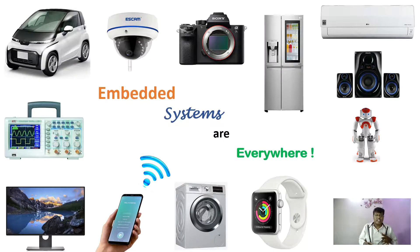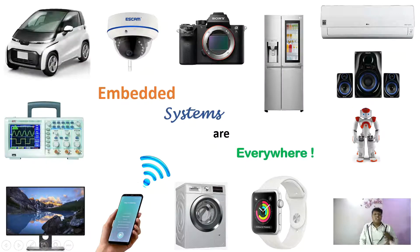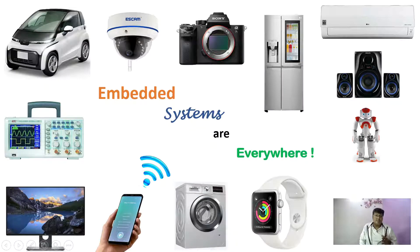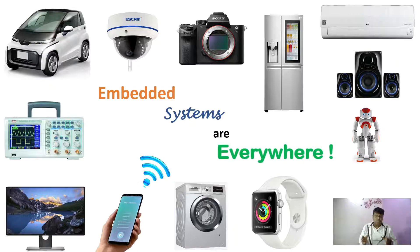Now let's look at the different types of embedded systems around us. Just look around yourself — there are plenty of embedded systems like cars, CCTV cameras, refrigerators, air conditioners, vehicles, and robots. You can see plenty of embedded systems performing automated specific tasks. In general, embedded systems exist everywhere, and in the future we may have much more complex and advanced systems performing automated tasks.